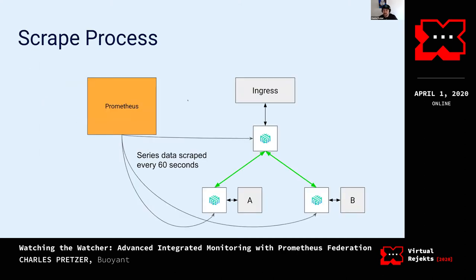My Prometheus server was configured to scrape every 60 seconds — I've changed that to scrape every 15 seconds because I wasn't getting great data. In this environment, the source for the Prometheus metrics is the Linkerd proxy, which is built into the Linkerd service mesh by design. Because the proxy is handling all the network traffic it is a great source of truth for things like p99 latency, success rates, error rates — all the golden metrics you may have heard of.